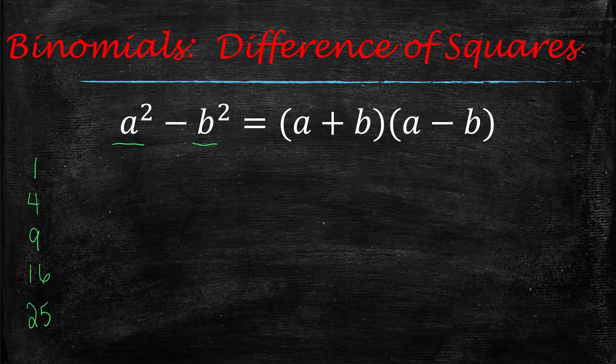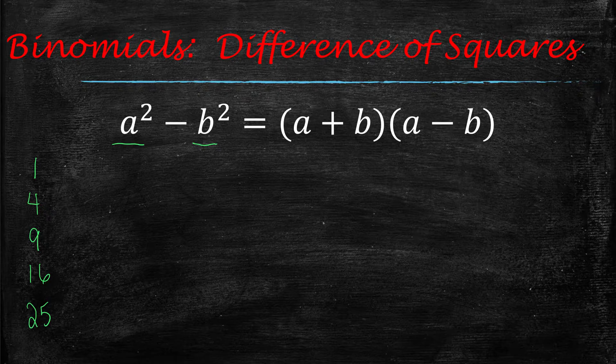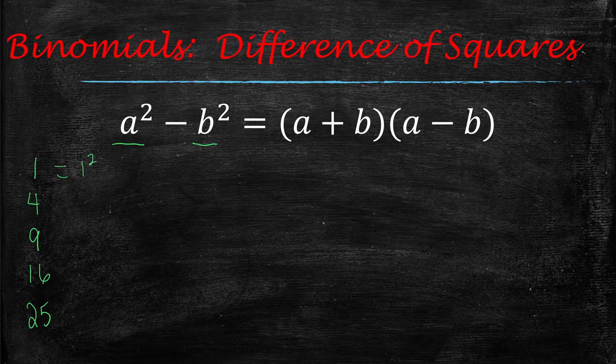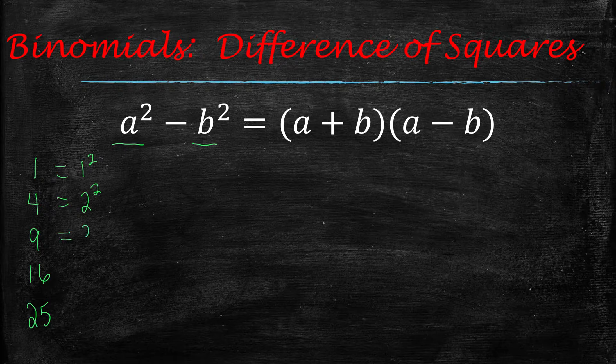These are perfect squares because they can be written as something squared. In other words, 1 can be written as 1 squared, 4 can be written as 2 squared, 9 can be written as 3 squared, and so on.